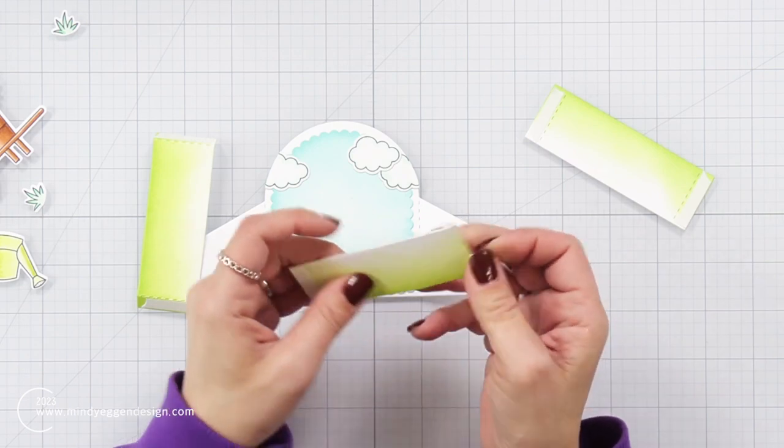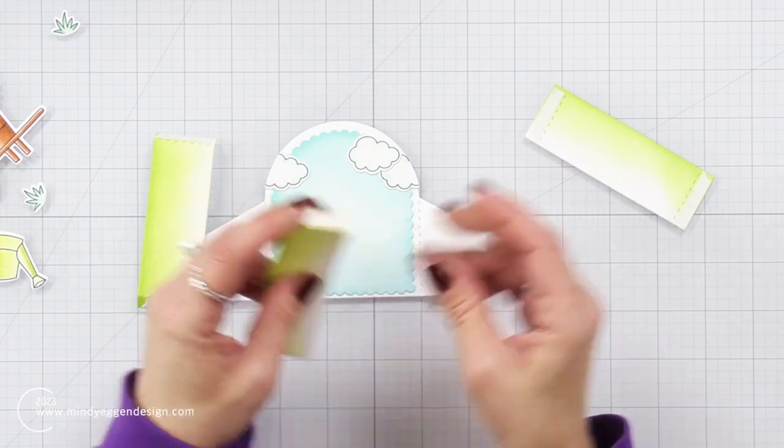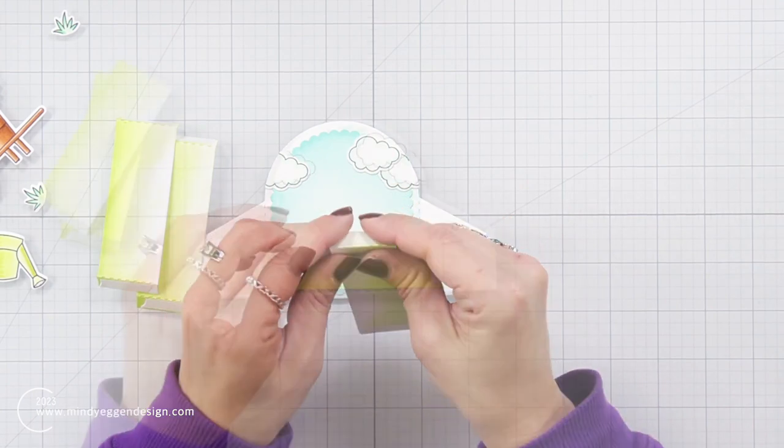And I'm taking my bone folder and I'm just burnishing that into the cardstock so that that double-sided tape is stuck down really well. And then I can go through these rectangle pieces and just fold along that dotted line.